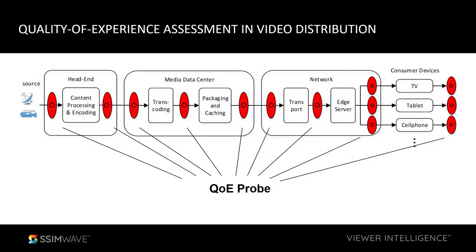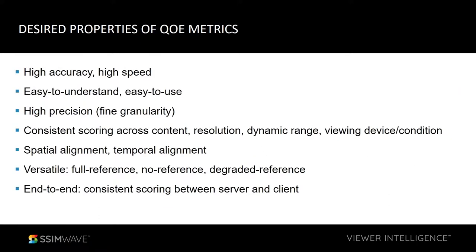The key thing to implement this idea is that you have to have a very, very good QoE metric. When we develop a QoE metric, encoder transcoding is just part of the story. We're thinking about something even bigger — what are the desired properties we want to have for quality assurance of the whole video distribution system. First, we want this QoE metric to have high accuracy and high speed, and to be very easy to understand and use, with very high precision. We also want it to provide consistent scoring across different content and across different resolution.